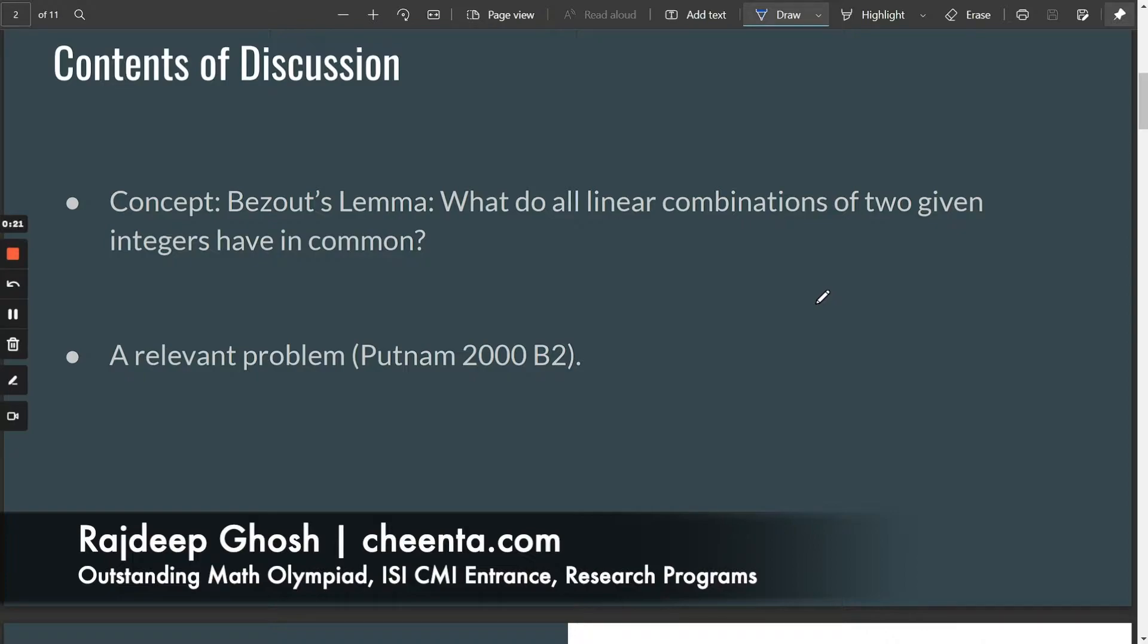The contents of discussion are as follows. We'll be talking about Bezout's Lemma and the primary source of where the lemma occurs from is the question: what do all linear combinations of two given integers have in common?